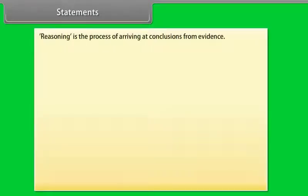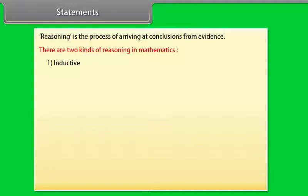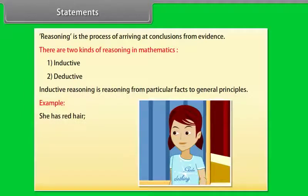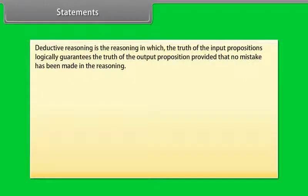Statements: Reasoning is the process of arriving at conclusions from evidence. There are two kinds of reasoning in mathematics. 1. Inductive. 2. Deductive. Inductive reasoning is reasoning from particular facts to general principles. Example: She has red hair, therefore she has a temper.